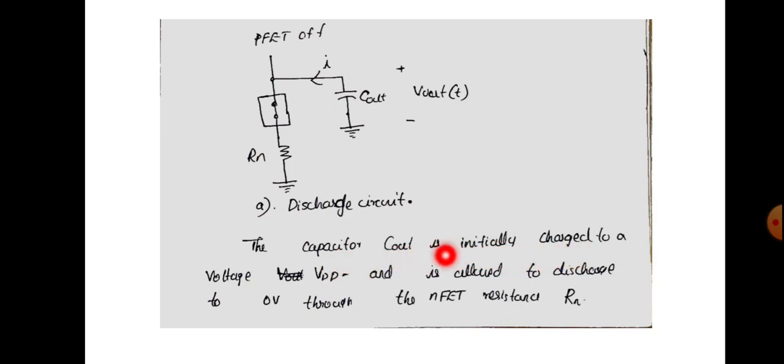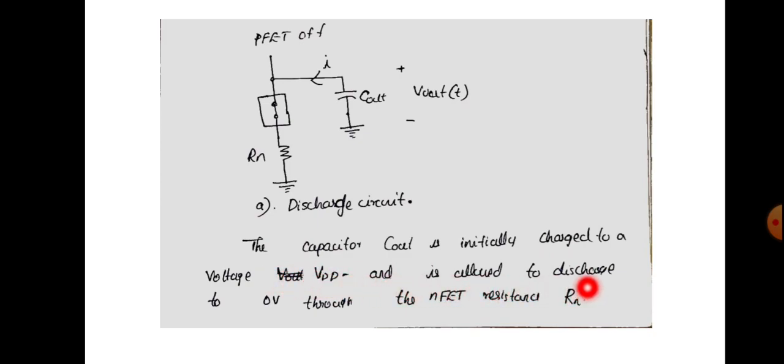The capacitor Cout is initially charged to a voltage VDD and is allowed to discharge to 0V through the NFET and resistance Rn.